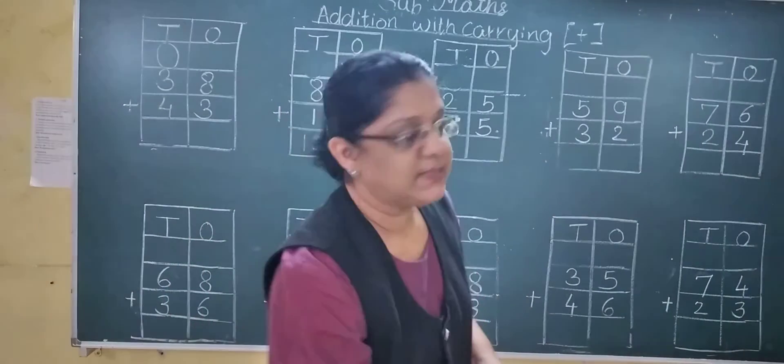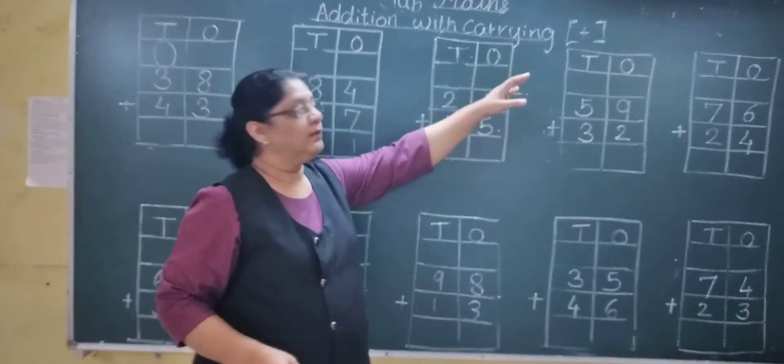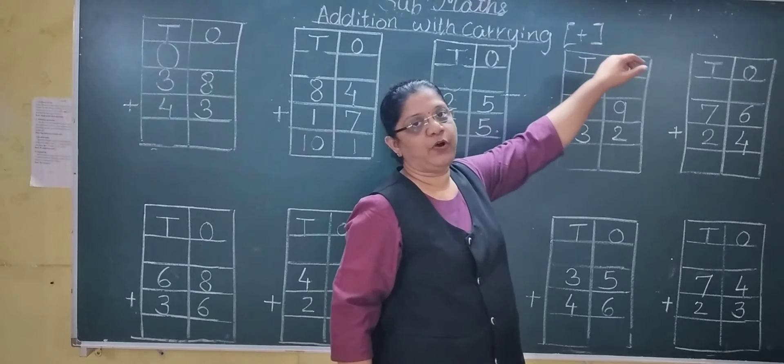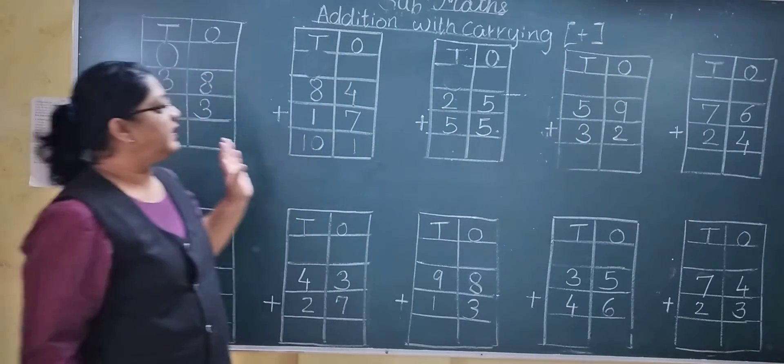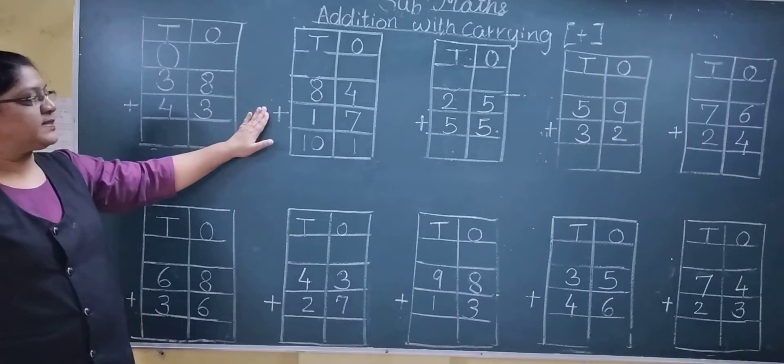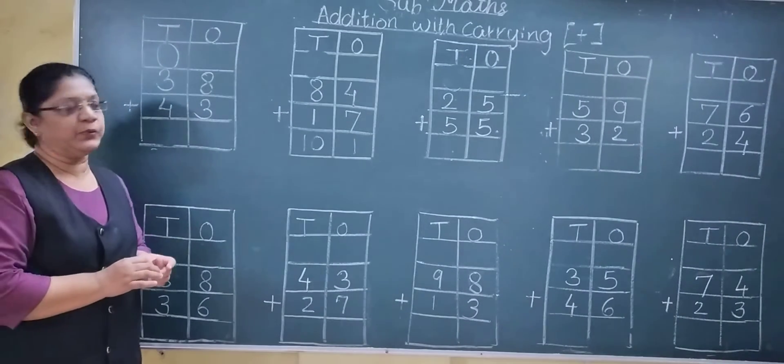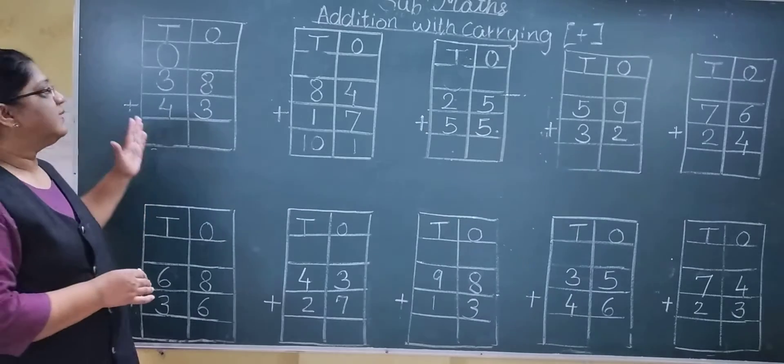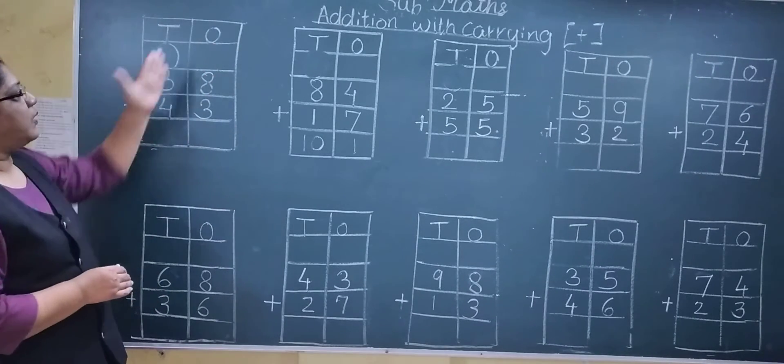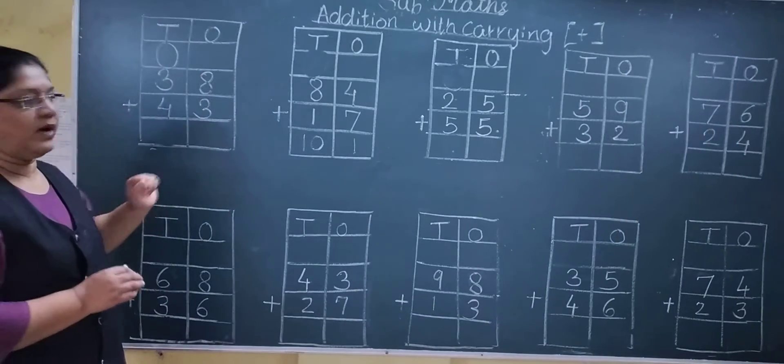Now today we will see addition with carry. See, this is the sign of addition, we call it plus. Now you will see some additional sums. You just write these sums in your math notebook. Then shall I start? See, this is the tens column, this is the ones column. So you just always start from ones.